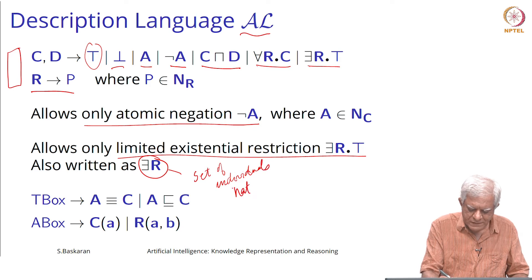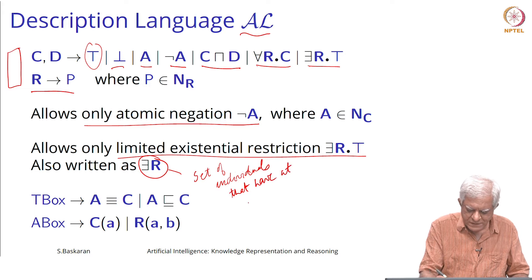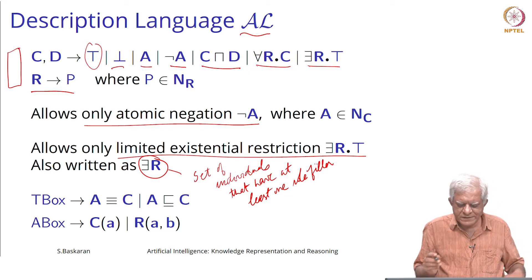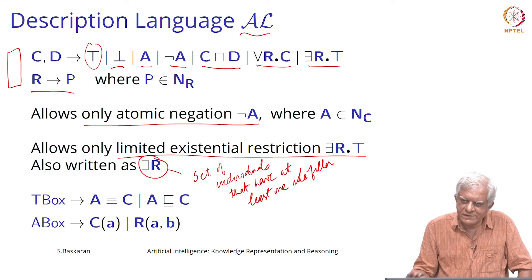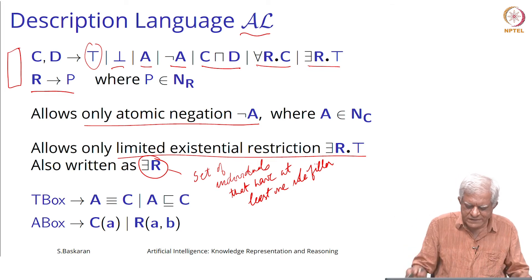This is the set of all individuals that have at least one role filler. Remember, role filler is a relation, what you are related to using that relation R.